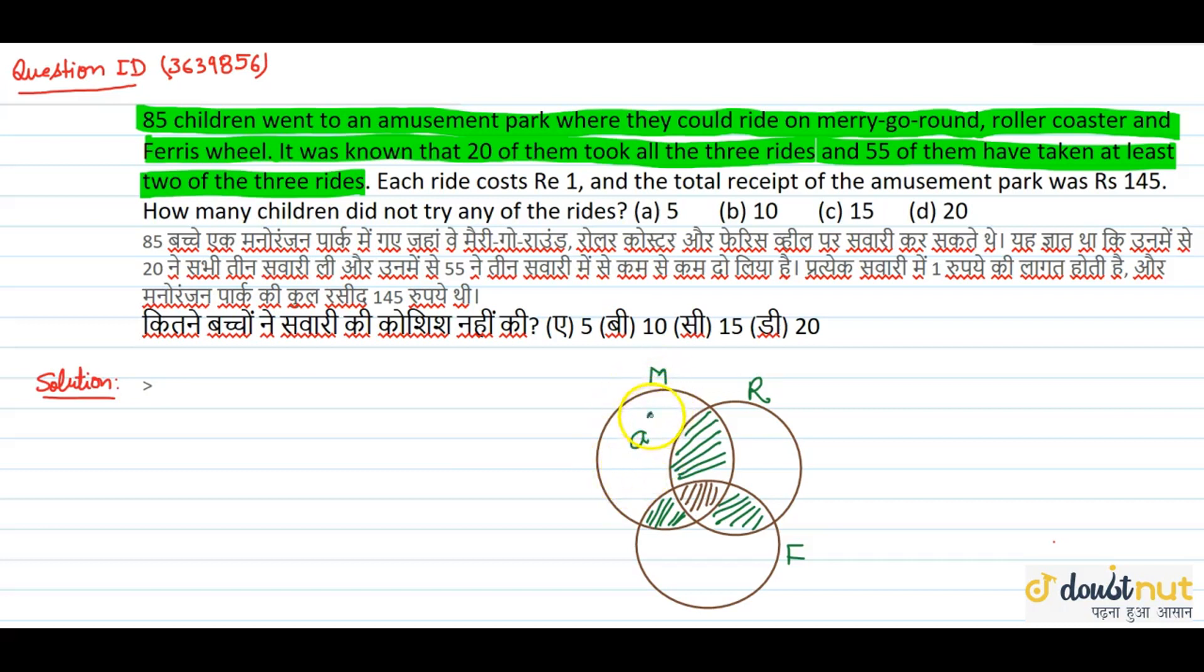Now let's denote the children who have only M, the children who have only R, and by C we have denoted the total number of students who have only F riding.